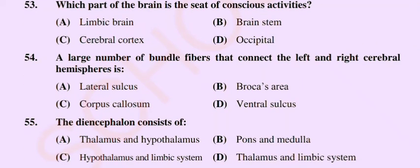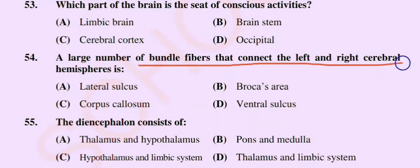Question number 54: A large number of bundle fibers that connect the left and right cerebral hemisphere is — option A: lateral sulcus, option B: Broca's area, option C: corpus callosum, option D: ventral sulcus. The correct option is option C: corpus callosum.